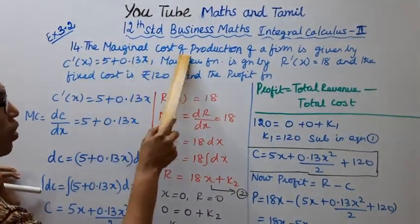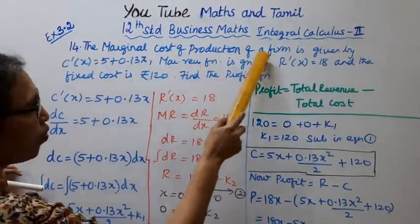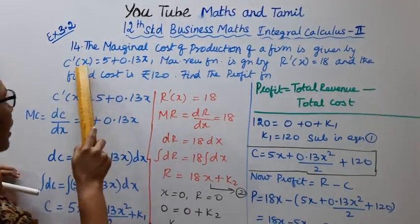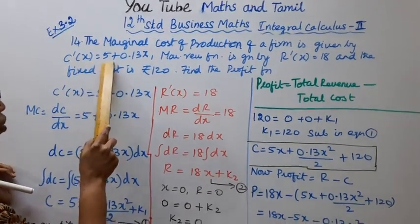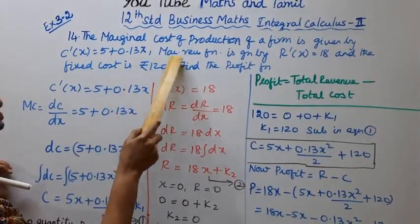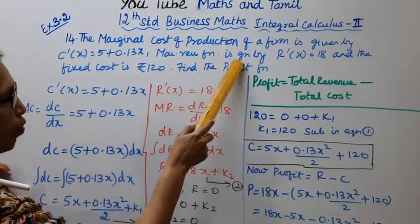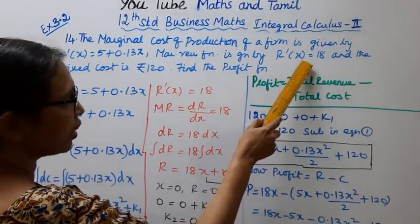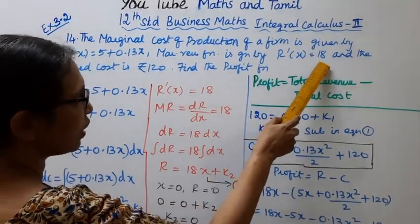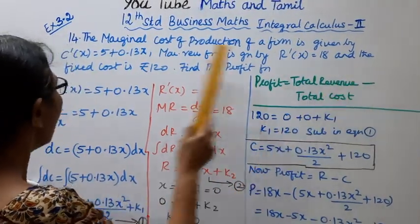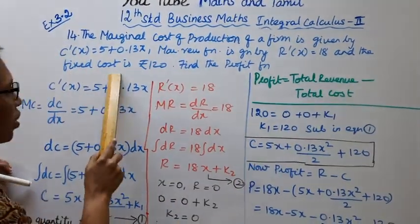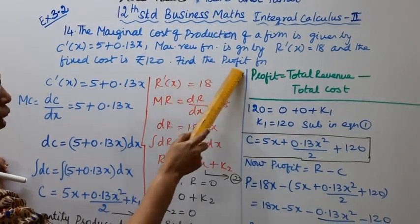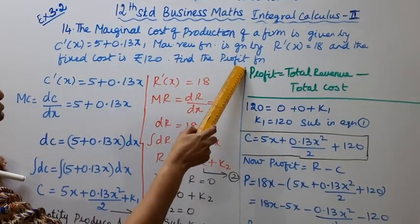The marginal cost of production of a firm is given by C'(x) = 5 + 0.13x. The marginal revenue function is given by R'(x) = 18. The fixed cost is rupees 120. Find the profit function.